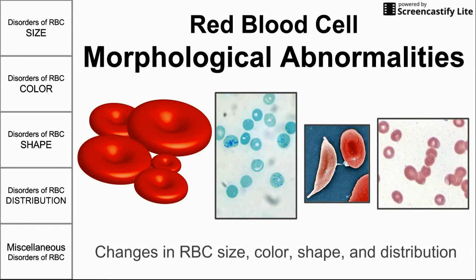This is a video on morphological abnormalities found in red blood cells. These abnormalities are crucial to identifying and diagnosing many hematological diseases. After we do a blood smear — where we smear a bit of blood and look at it under the microscope — we can use these morphological abnormalities to diagnose several diseases. We're going to be talking about changes in red blood cell size, color, shape, and distribution.